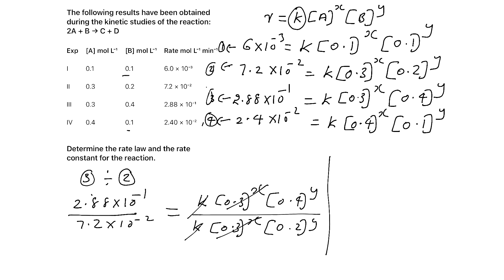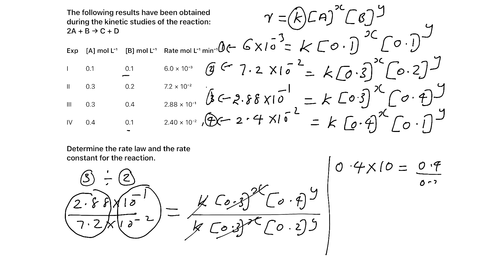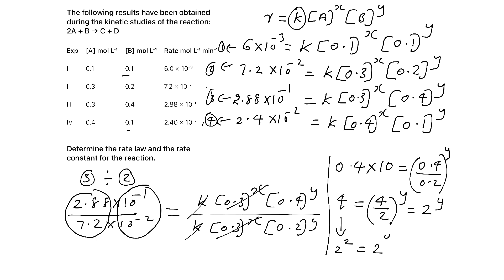So 4 equals 2 raised to Y. Since 4 is 2 squared, 2² = 2ʸ, therefore Y is equal to 2. We got the Y value, which is 2.